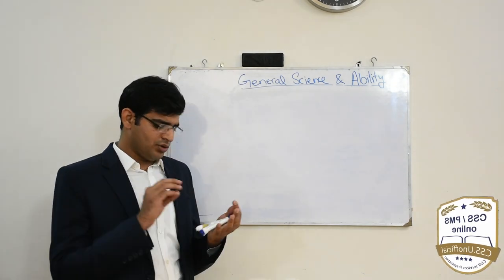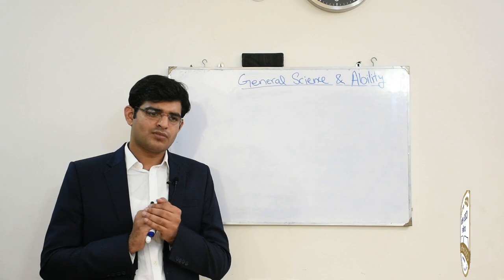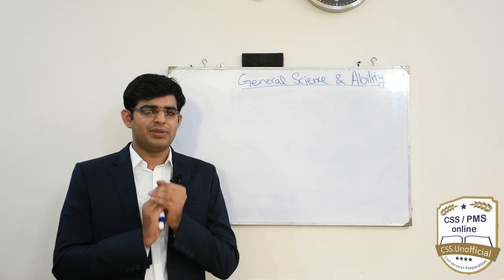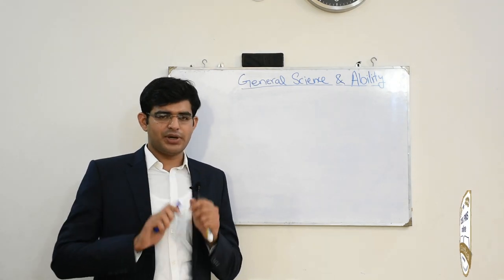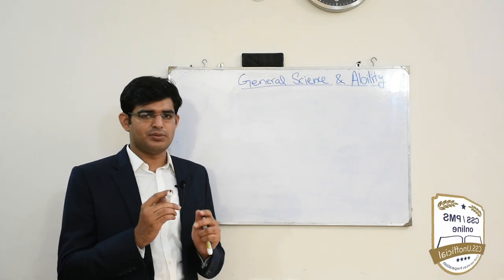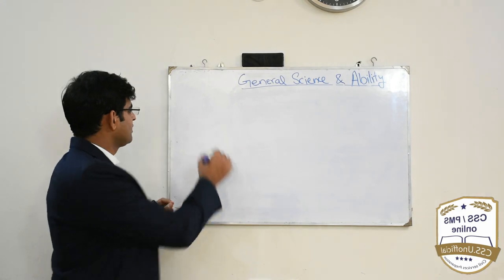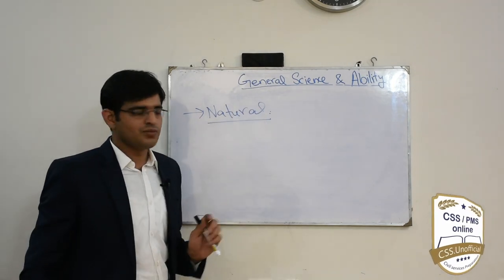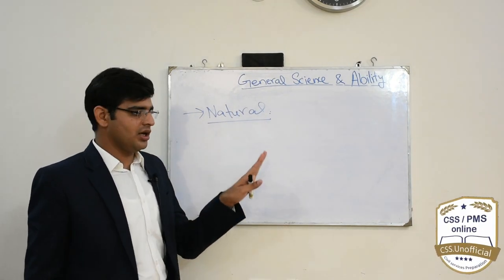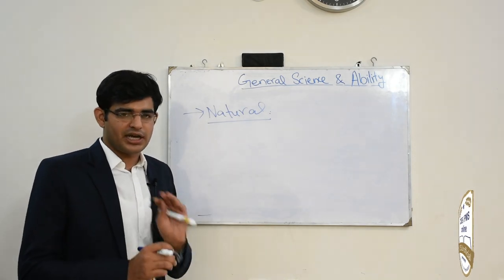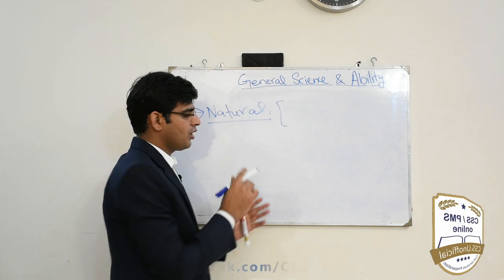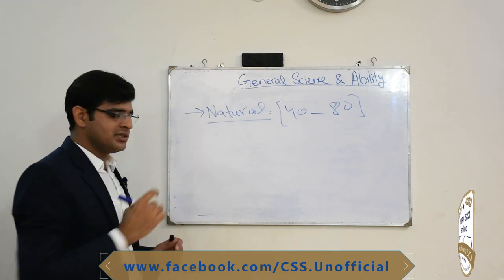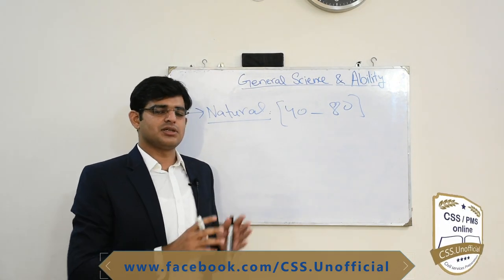Today we will see how to prepare the subject of General Science and Ability for maximum score. This is a compulsory natural science subject, and because of its nature, scores vary widely from 40 to 80, covering many natural science fields.